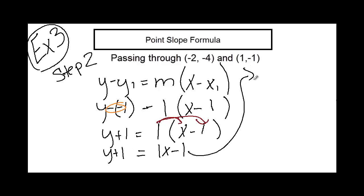Moving over here, we're going to have y plus 1 is equal to x minus 1. We're going to subtract 1 from both sides, so now you have y is equal to x minus 2.